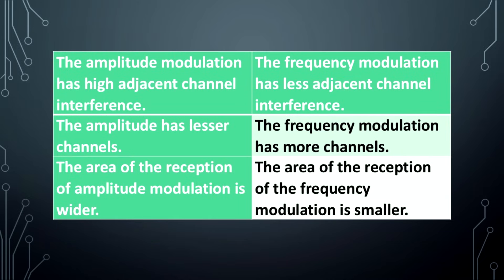Amplitude modulation has high adjacent channel interference; frequency modulation has less adjacent channel interference. Amplitude modulation has fewer channels; frequency modulation has more channels. The reception area of amplitude modulation is wider; the reception area of frequency modulation is smaller.